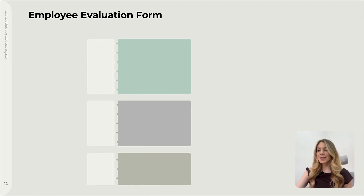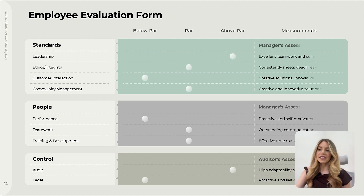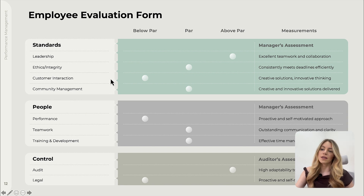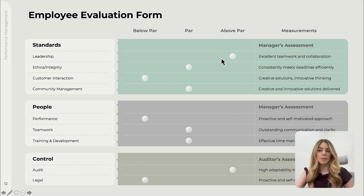Next, we have tools for individual employee reviews. Typically, a direct manager evaluates an employee's performance in various areas. This slide shows an evaluation form where performance can be rated as below-par, on-par, or above-par, with space for additional comments.